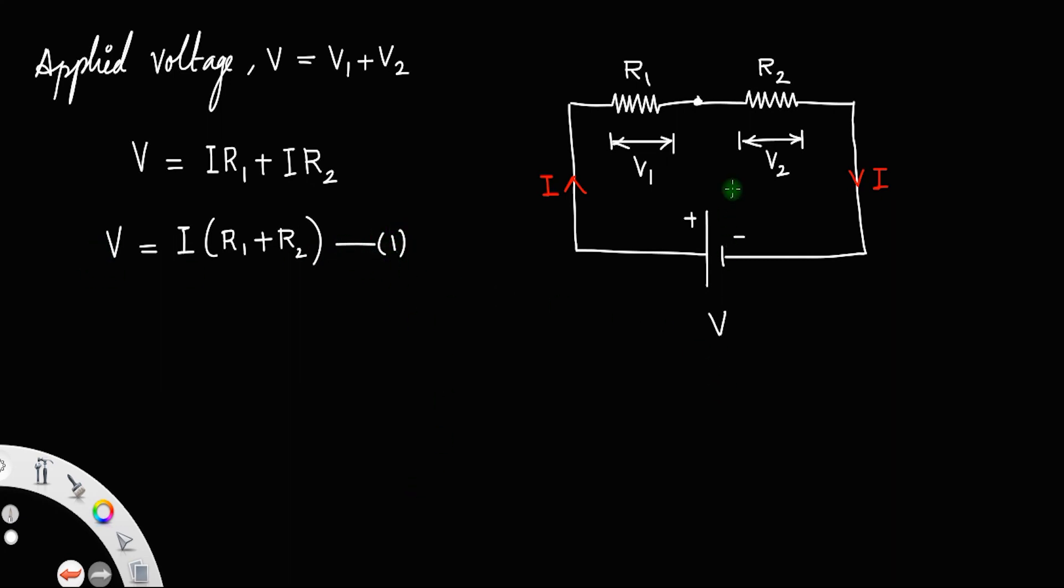Now, what I am going to do is, I am taking the same cell again, that is the cell that provides a potential of V, same potential as this one. And I am replacing these two resistors with a single resistor of resistance, let us say, Rs. What this Rs is doing is that this Rs will give the same effect as this R1 and R2 combined.